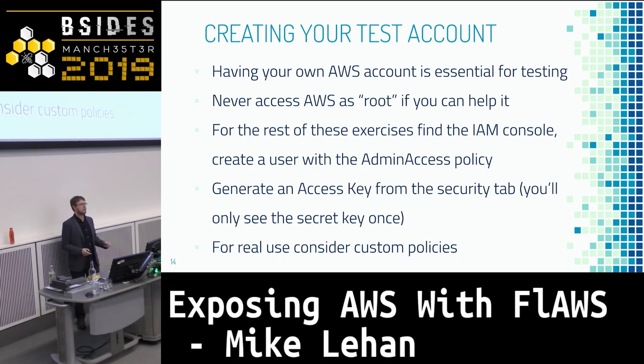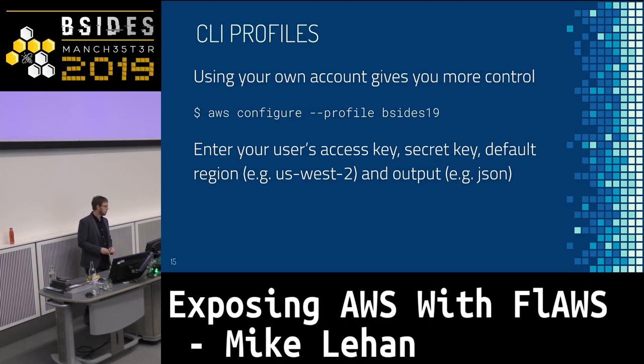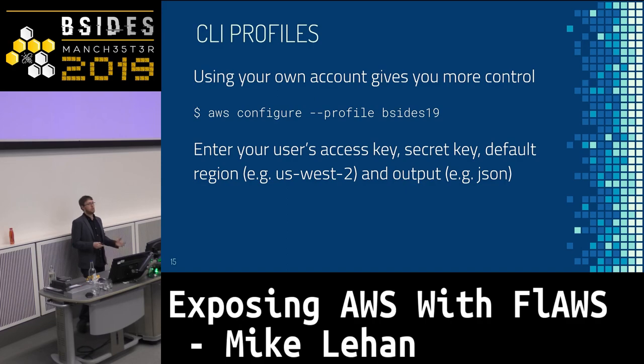I'm not going to cover the full account setup here — there are plenty of tutorials online. The key thing is you generate an access key, see a security key for it, and insert this into the console. If you type 'aws configure', you can give it a profile name — say 'bsides19' — then put in your access key and secret key. Now you can run as that user and account for this work without affecting any other AWS accounts on your system. US West 2 is a good default region since everything in this exercise is hosted there.